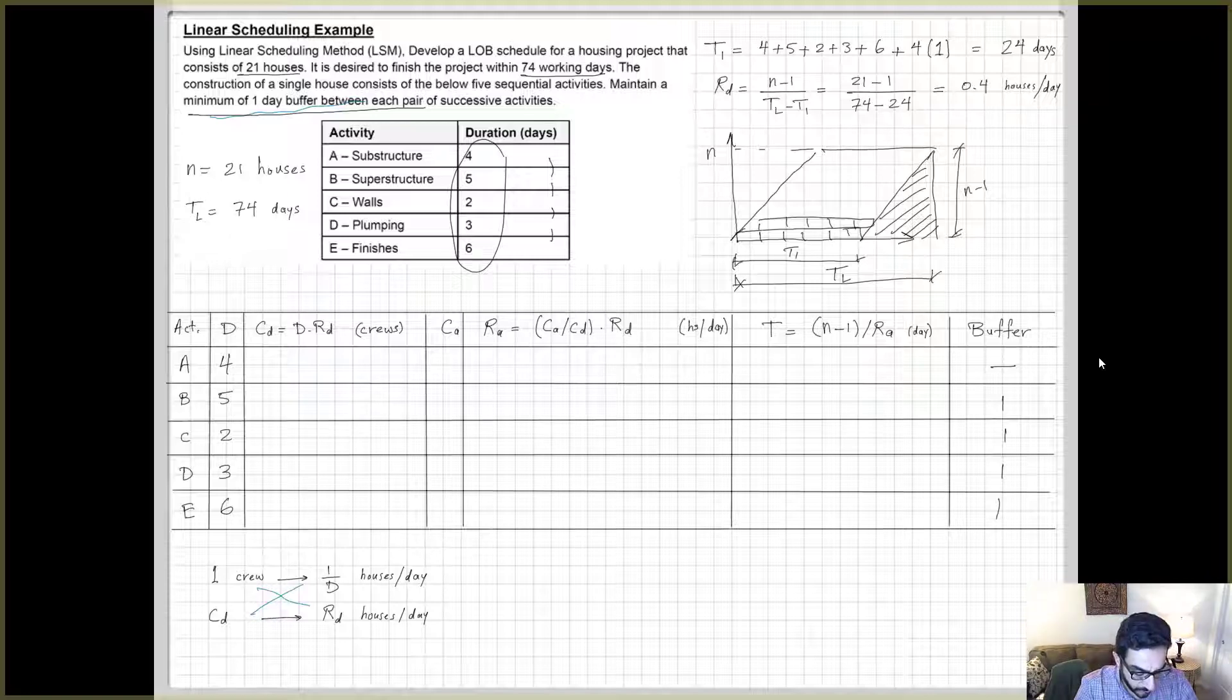So now knowing where the formula comes from, we just need to apply it. For every activity, multiply its duration if you use one crew times the required rate. For example, the first activity A, D is equal to four times RD 0.4, you end up with 1.6 crews. Doing the same formula for the rest of the activities, you end up with some values or integers, some are real numbers with digits.